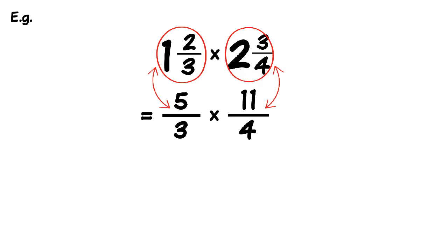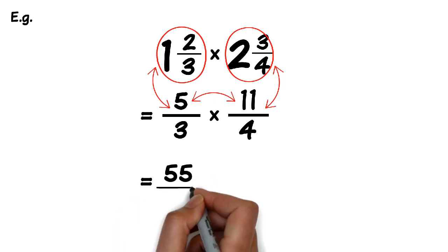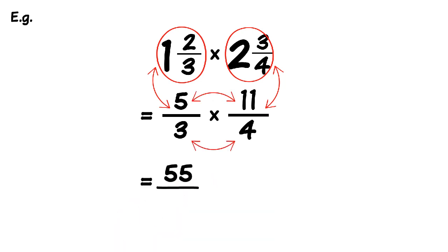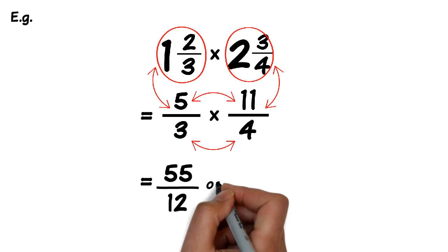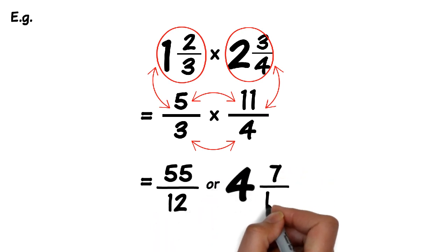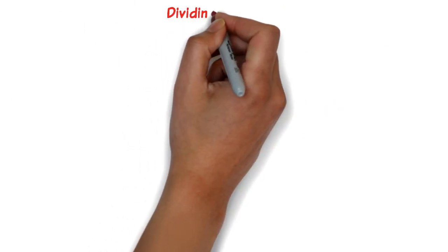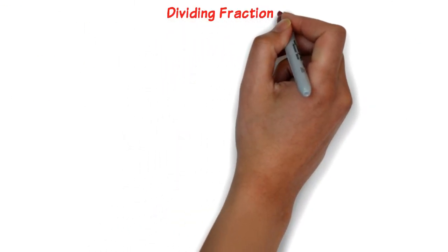Now we can multiply the fractions. Multiplying the numerators: 5 times 11 equals 55. Multiplying the denominators: 3 times 4 equals 12. So the new fraction becomes 55 over 12. And that's how easy it is!